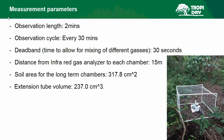We used an observation length of 2 minutes and an observation cycle of 30 minutes. A dead band — the time to allow for mixing of different gases — was 30 seconds. The distance from the infrared gas analyzer to each chamber is 15 meters, which is the maximum length of tubing we had. The soil area for the long-term chamber is 317 centimeters squared, and the extension tube volume is 237.0 centimeters cubed. On the bottom right, you can see what one of the deployed chambers looks like.